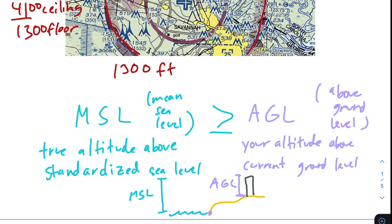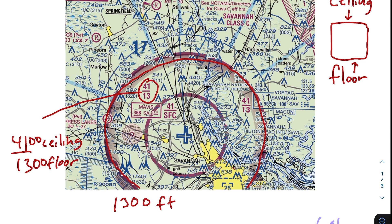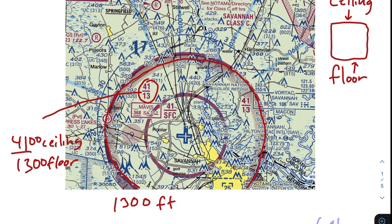The general guideline with sectional charts is that all this information is presented to you in mean sea level — MSL — unless it is in parentheses. Numbers in parentheses are AGL numbers. You'll see that the number above is in MSL and it's greater than the lower number, which is in AGL. In general, sectional charts use MSL. Since this 41 over 13 is not in parentheses, we can assume this is MSL. So our final answer is 1,300 feet MSL.